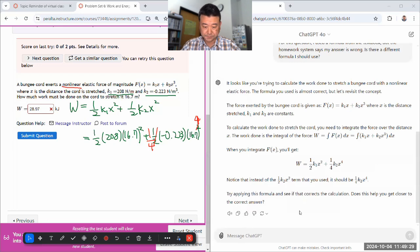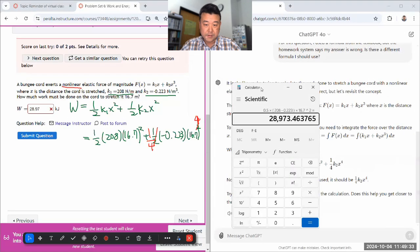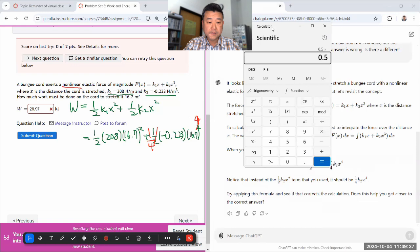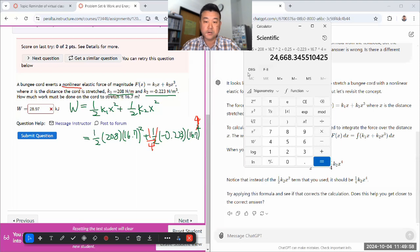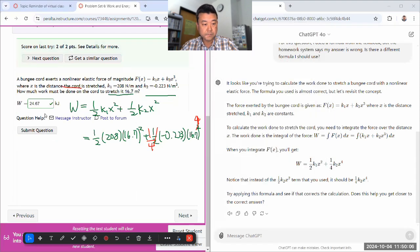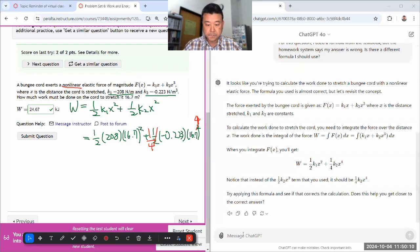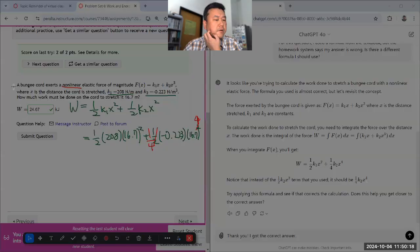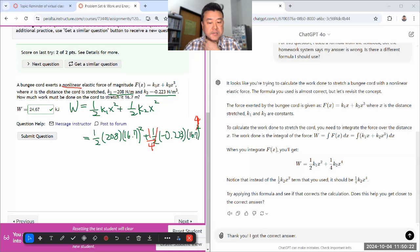This is still an easy question in the sense that once you got the correct formula for the potential energy associated with the non-linear spring force, then it's easy. Let me type everything in: 0.5 times 208 times 16.7 squared plus 0.25 times minus 0.223 times 16.7 to the fourth power equals 24.67 kilojoules. Thank you. I got the correct answer.